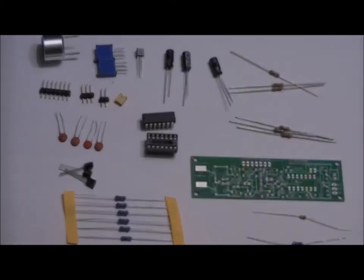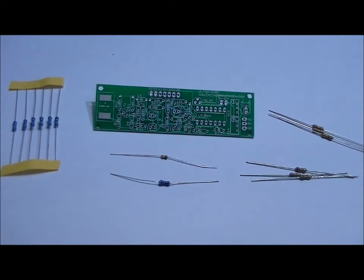So first things first, let's solder the resistors into place. Everything is labeled on the PCB, but you're going to need a closer look. So again, here are all the resistors.